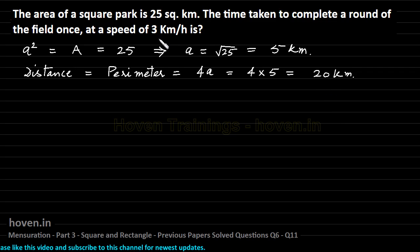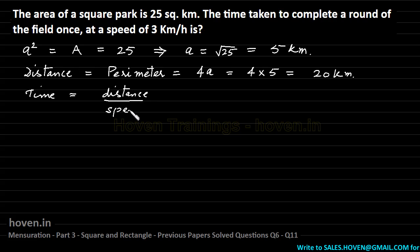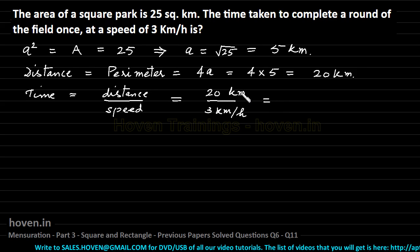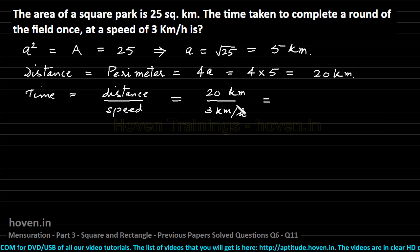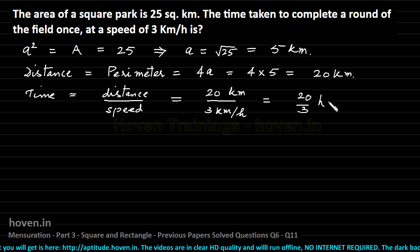It has to be travelled at a speed of 3 kilometers per hour. Now we simply need the speed, distance and time formula to find out time. So we can write time is equal to distance to be travelled over the speed at which it will be covered, which is equal to 20 kilometers divided by 3 kilometers per hour. Be careful about the units — they are in kilometers and kilometers per hour, which are compatible. Had one of them been in meters, we would have to convert them to make them similar.